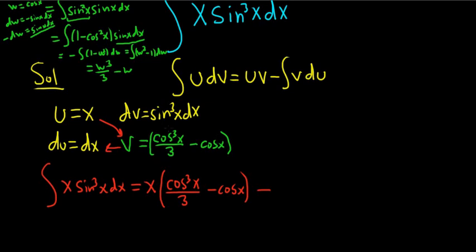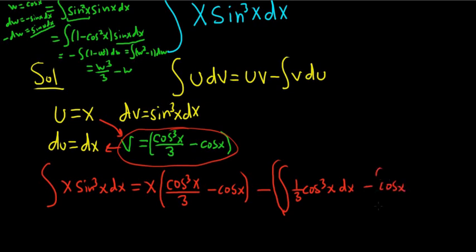So du is just dx, so we just have to integrate this thing here. So this is going to be the integral of one third cosine cubed x dx, and then it's minus cosine x integral dx. I just went ahead and broke it up.